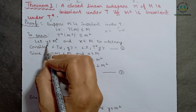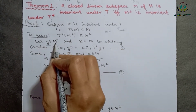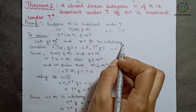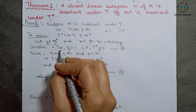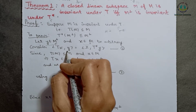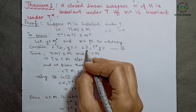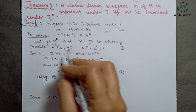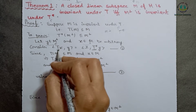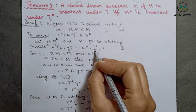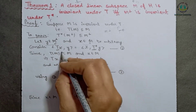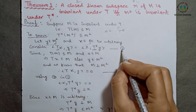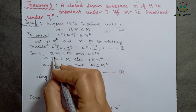For this, let y belong to M orthogonal and x belong to M be arbitrary elements. Then consider the inner product of Tx with y. We can write it as the inner product of x with T* y, where T* is the adjoint of operator T. Label this equation (1).